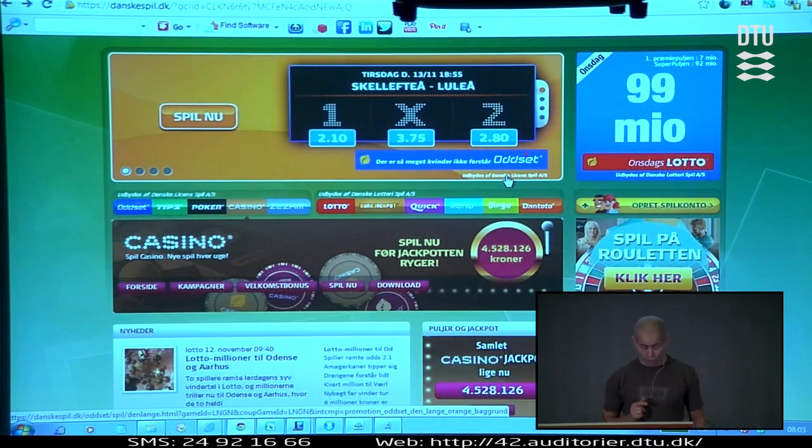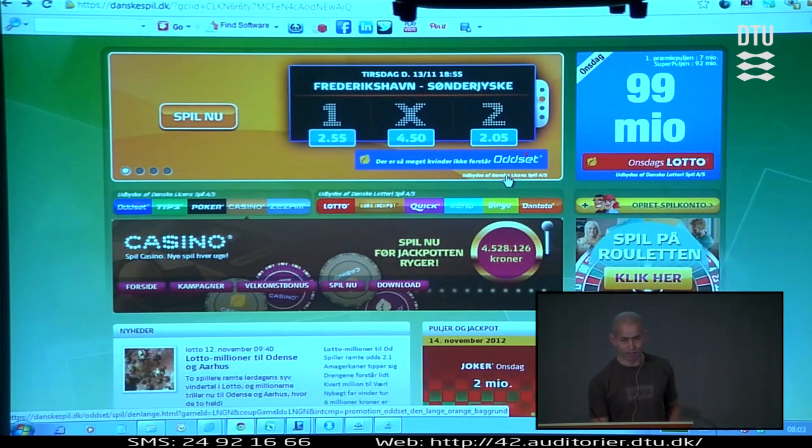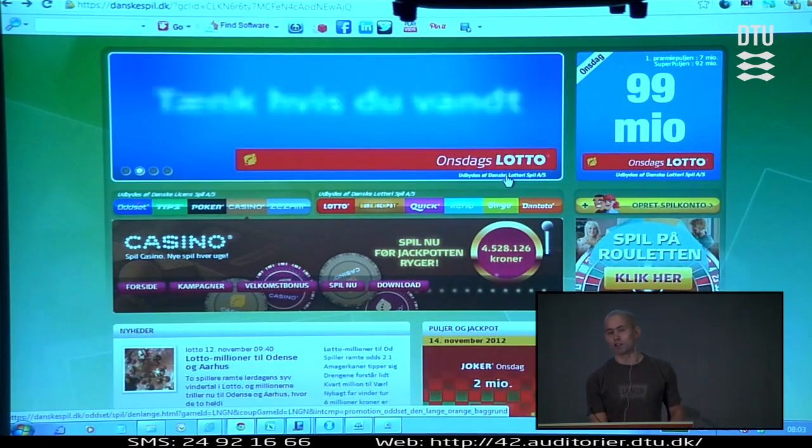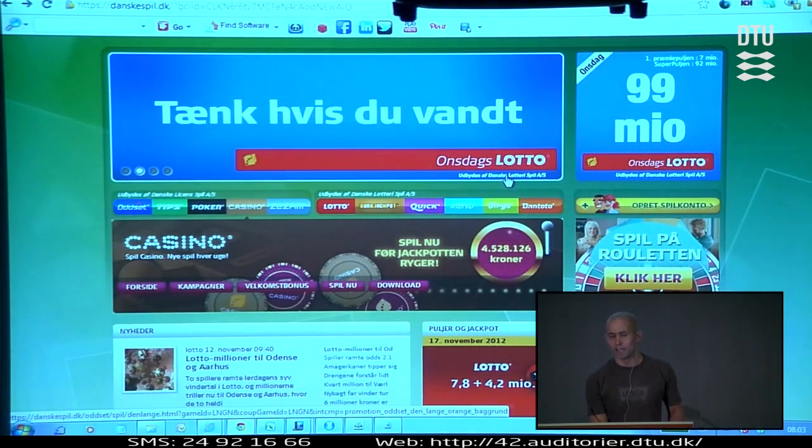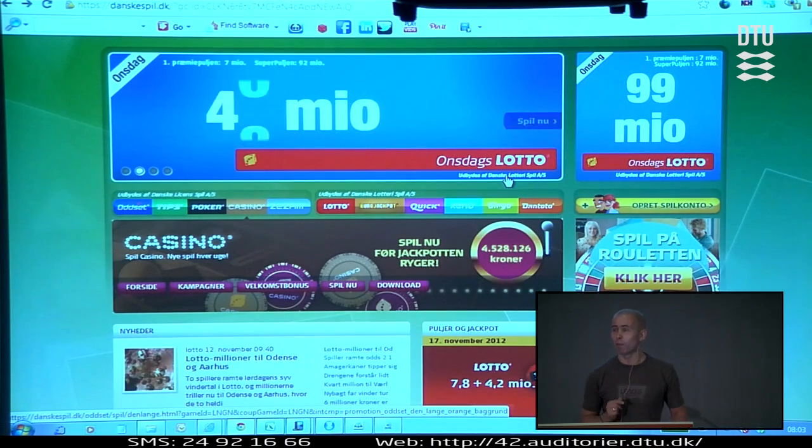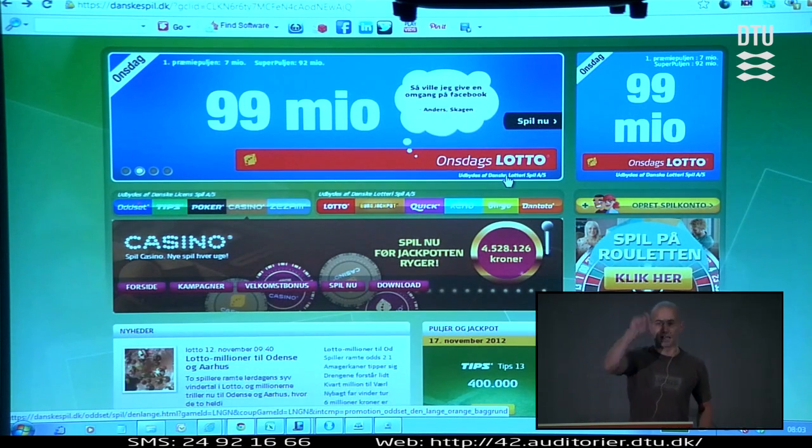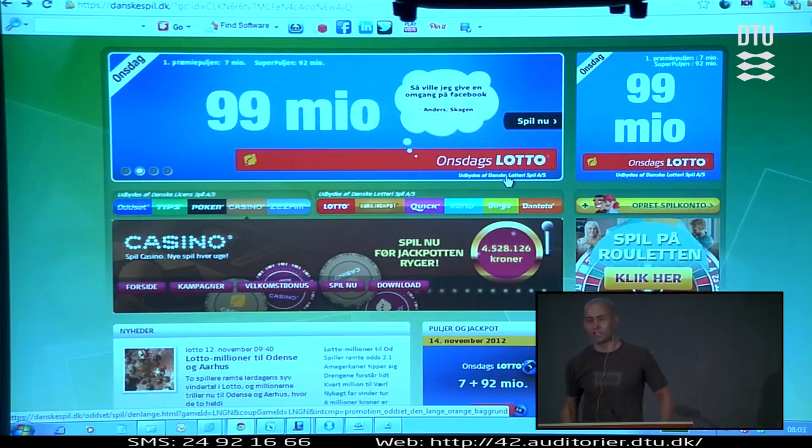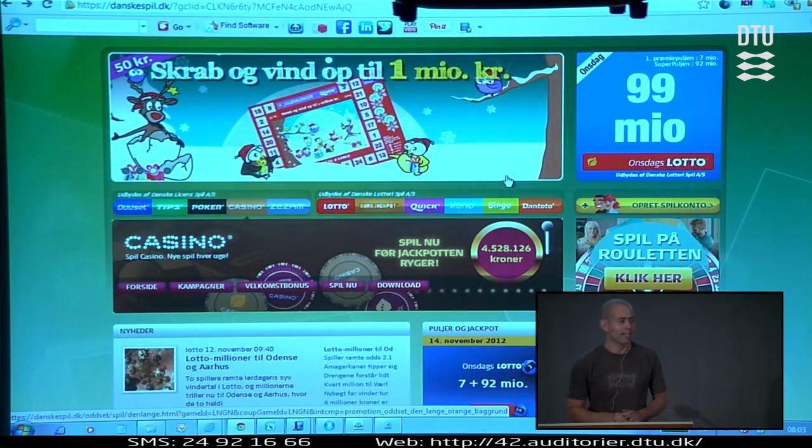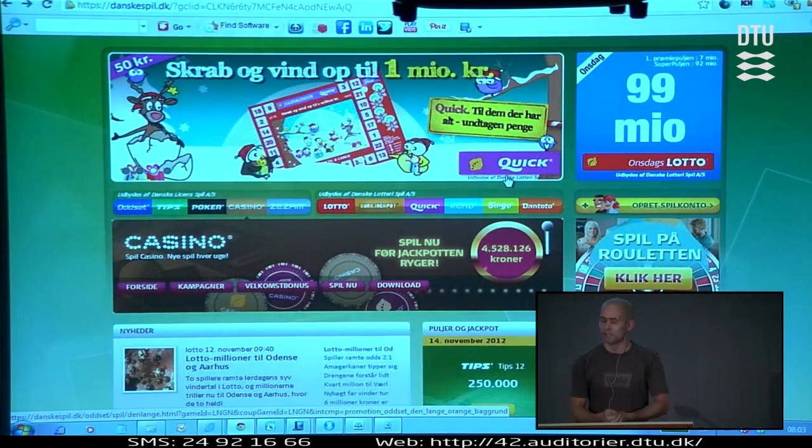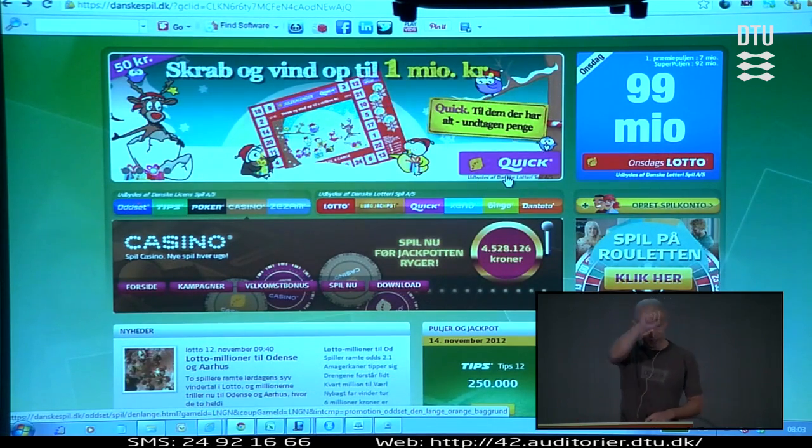And had Danske Spil done that previously, they would have more earlier found some of the mistakes they've done. I'm not going to tell you all the mistakes they might have done. One mistake was that they had this do it for fun game, this scratchcard game where you scratch things and if you have three in a row, you win half a million or something like that.